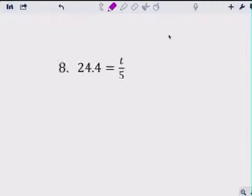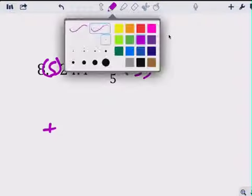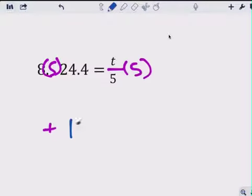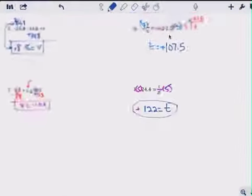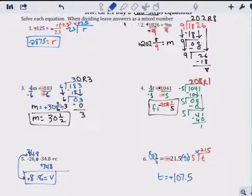Last one. Okay, this is division. So the opposite of divide is multiply, define our answer by 5. And a positive times a positive is a positive. So 24.4 times 5 is equal to 122 equals to t. That's all the answers for today's homework.